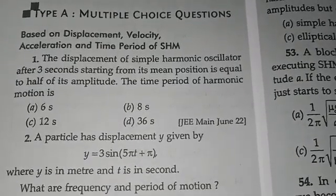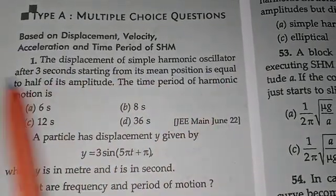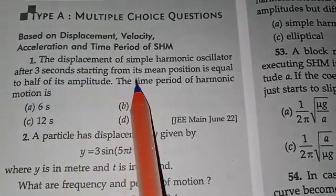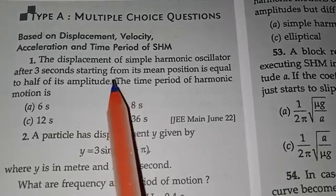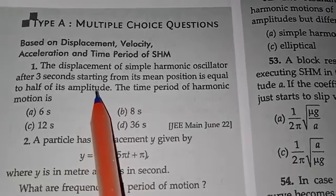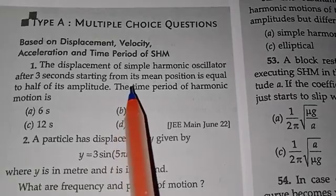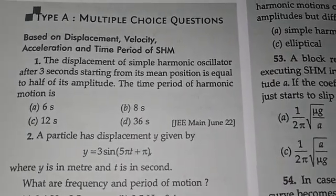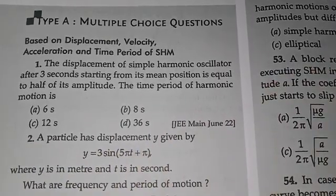The first question: the displacement of a simple harmonic oscillator after 3 seconds, starting from its mean position, is equal to half of its amplitude. The time period of the harmonic oscillation is: 6 seconds, 8 seconds, 12 seconds, or 36 seconds?